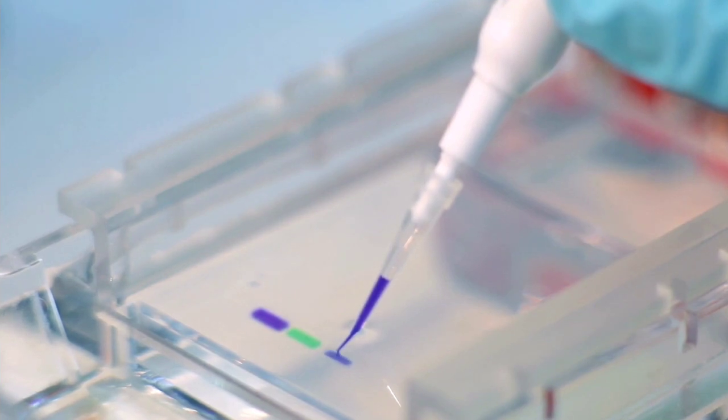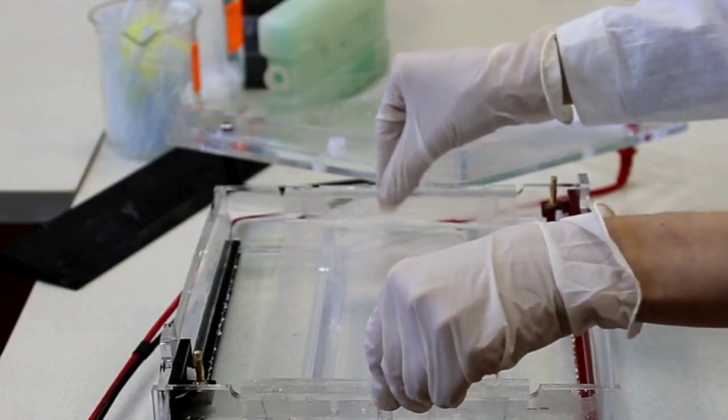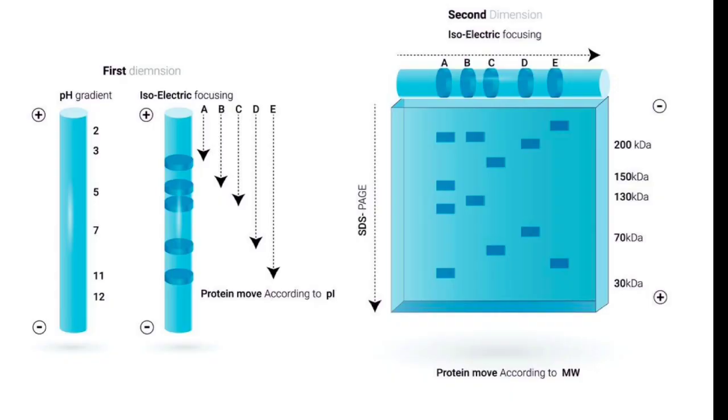2. Loading. The sample containing the molecules to be separated is mixed with a tracking dye, which provides a visual indicator of the migration progress. The mixture is loaded into wells or slots at one end of the gel.